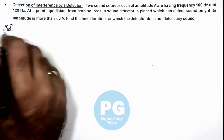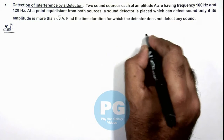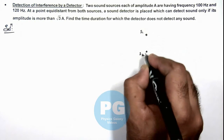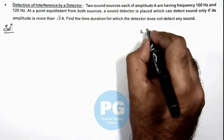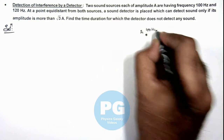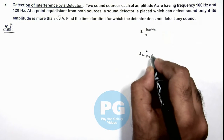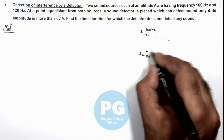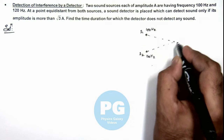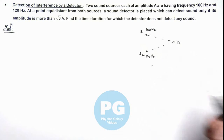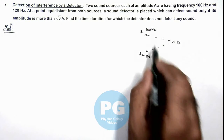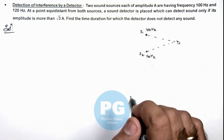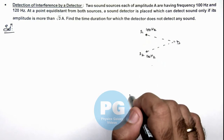In the solution, we can draw the situation: there are 2 sources S1 and S2 with frequencies 100 Hz and 120 Hz respectively, and a detector is placed equidistant from these 2 sources. We can see there is no physical path difference between the sources, but due to the difference in frequencies, beats will be observed at the detector.